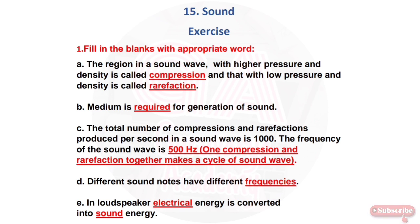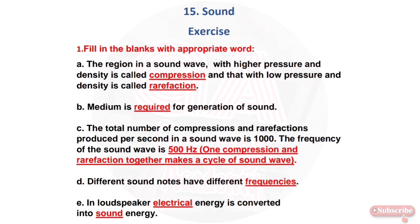B. Medium is required for the generation of sound. C. The total number of compressions and rarefactions produced per second in a sound wave is 1000. The frequency of the sound wave is 500 Hz, because one compression and one rarefaction together make one cycle of a sound wave.